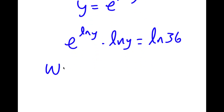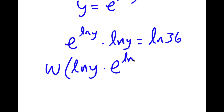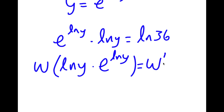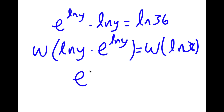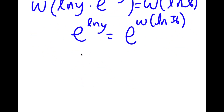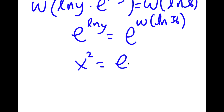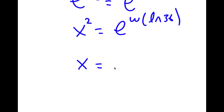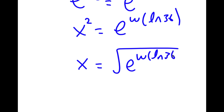Now I'm going to take the Lambert W function on both sides. So I have W of ln y times e to the power of ln y is equal to W of ln 36. This results in ln y equaling W of ln 36, meaning e to the power of ln y equals e to the power of W of ln 36. And remember how we let y equal x squared — so now I have x squared is equal to e to the power of W of ln 36. Taking the square root on both sides, x is equal to plus or minus the square root of e to the power of W of ln 36.